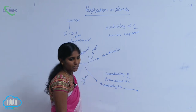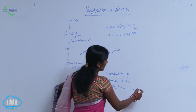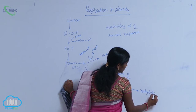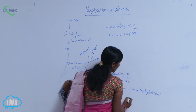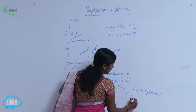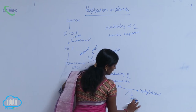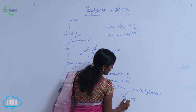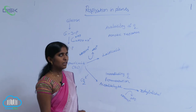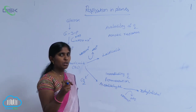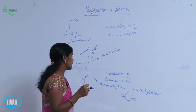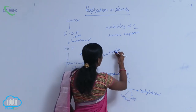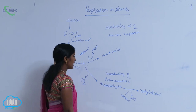The acetaldehyde is converted into ethanol, ethyl alcohol. Here, one NADH2 is utilized. The less amount of energy is released in both conditions. Based on the products, fermentation is divided into different types.